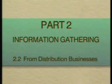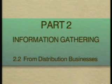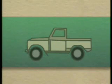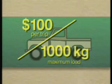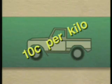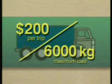Part 2: Information Gathering from Distribution Businesses. I need to know the cost of transporting produce in a pickup or a lorry from here down to the main town and also from the hilly region. Mechs finds out that the cost of hiring a pickup is $100 per trip and it can carry 1,000 kilograms, giving a transport cost of 10 cents per kilo. Lorries cost $200 per trip and can carry 6,000 kilograms at a cost of 3 and one-third cents per kilo.